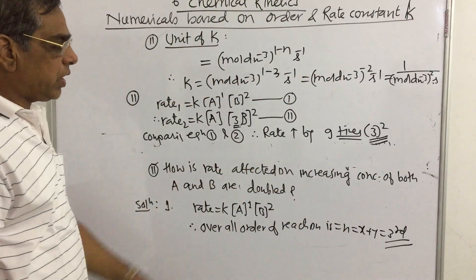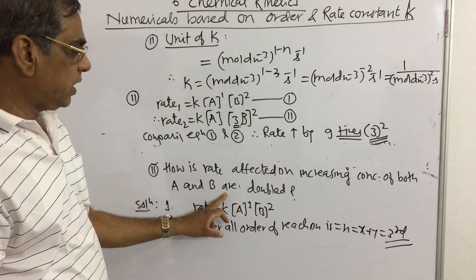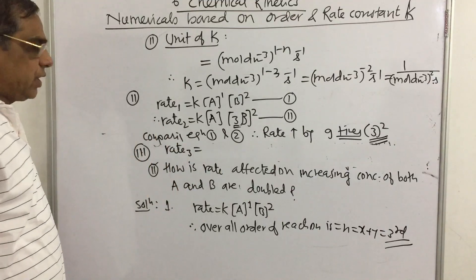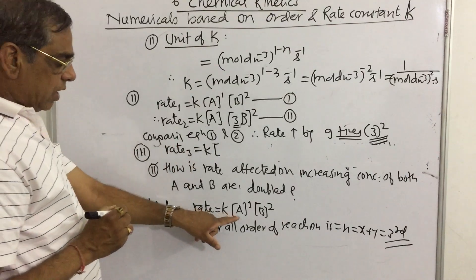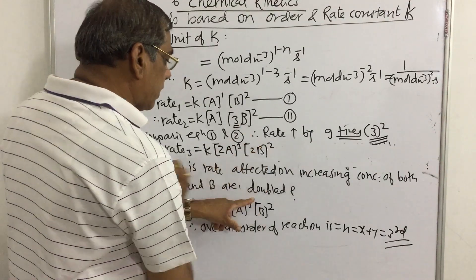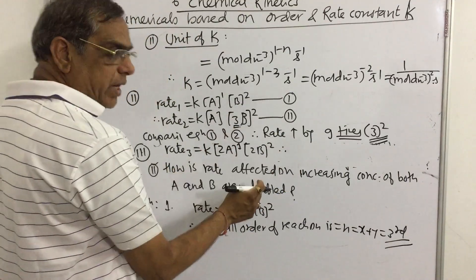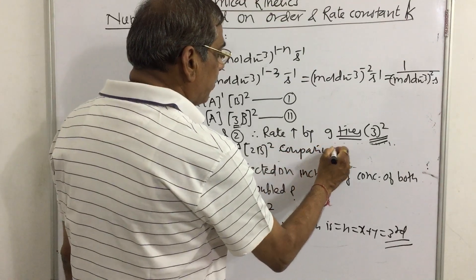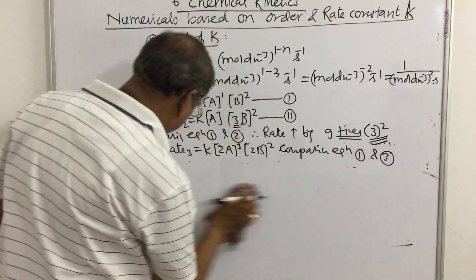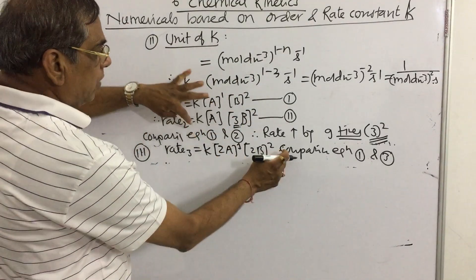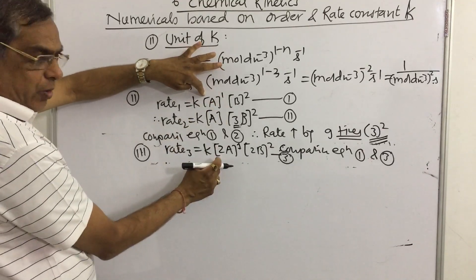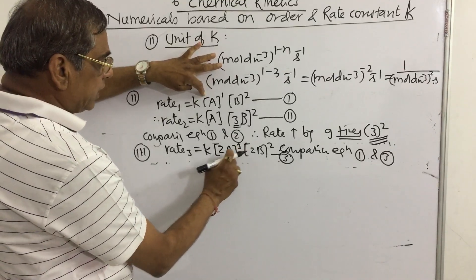How is the rate affected when the concentrations of both A and B are doubled? We write Rate₃ equals k into 2A raised to the power 1, and 2B raised to the power 2. Comparing equation 1 and equation 3: the concentration of A is doubled giving a factor of 2 raised to the power 1, and B is doubled giving 2 raised to the power 2, so the rate increases by 2 times 4, which equals 8 times.